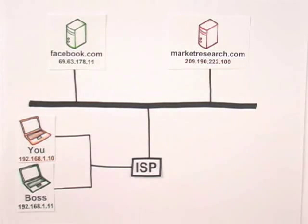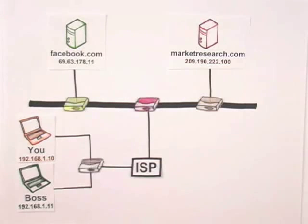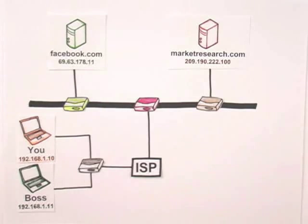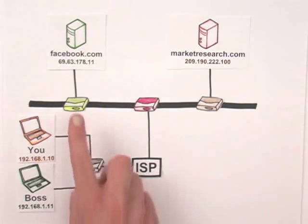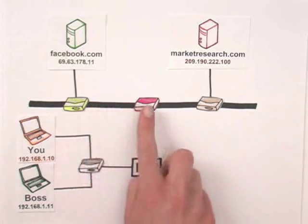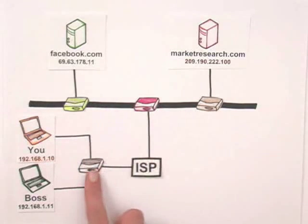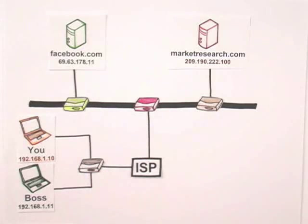That includes your computer, servers, cell phones, and all of the equipment in between. Anywhere two or more parts of the Internet intersect, there's a piece of equipment called a router. Routers direct your packets around the Internet, helping each packet get one step closer to its destination.